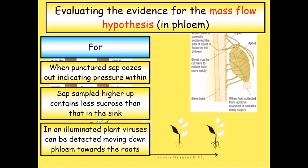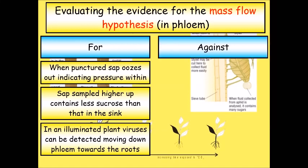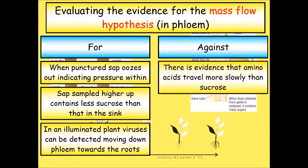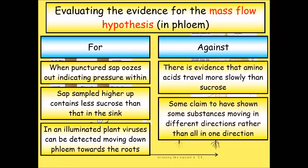But the problem is there's some evidence to show against this such as amino acids travel more slowly than sucrose and they should, if it's just a flow theory, all travel roughly the same speed. And also some people have claimed that they've seen substances moving against it. Anyway that's all done, enjoy.